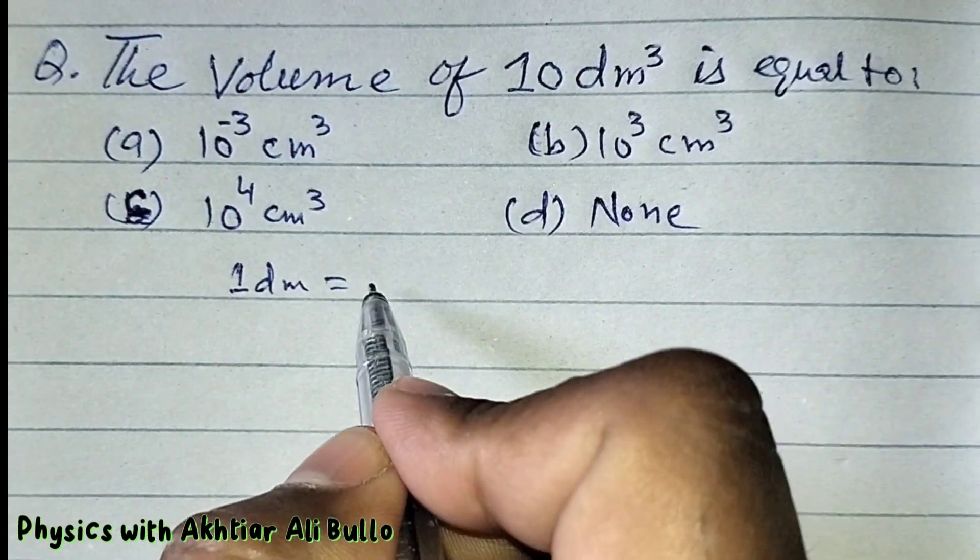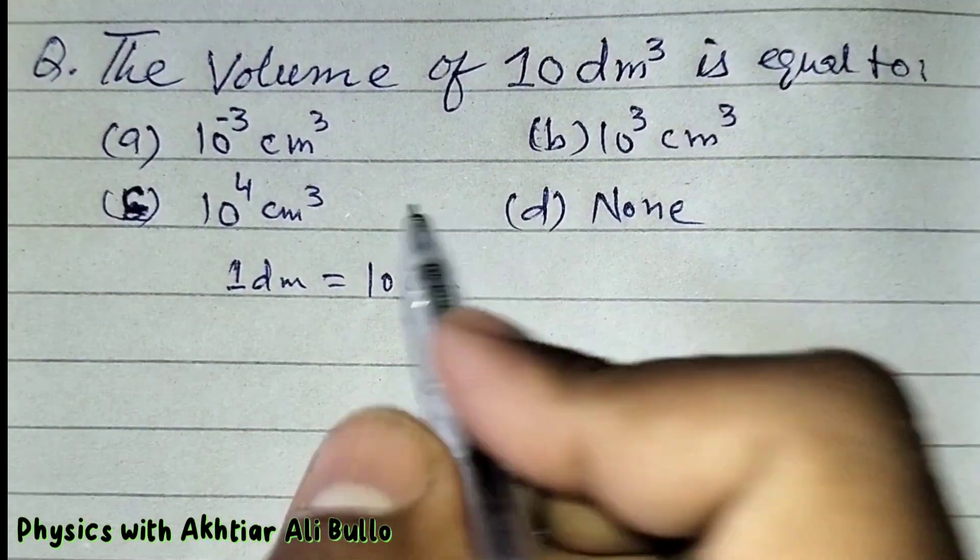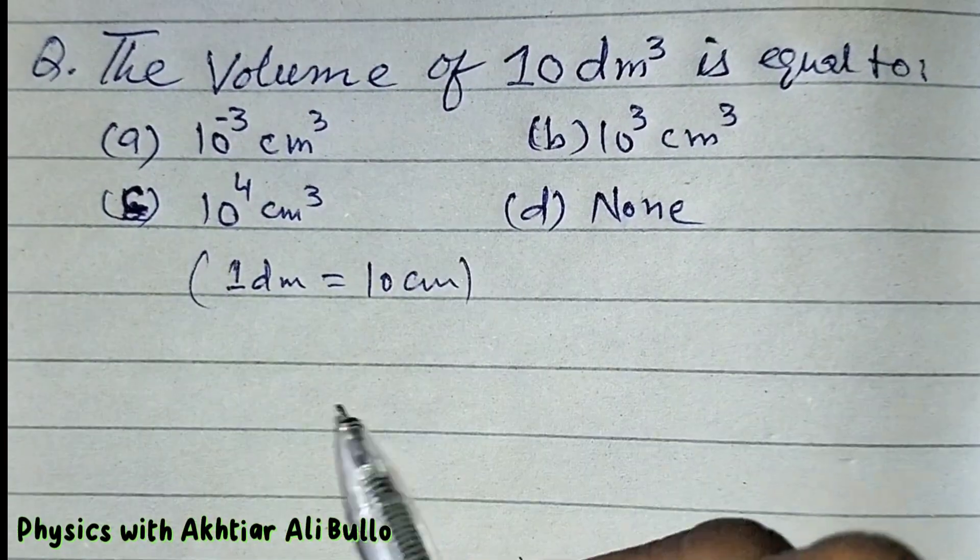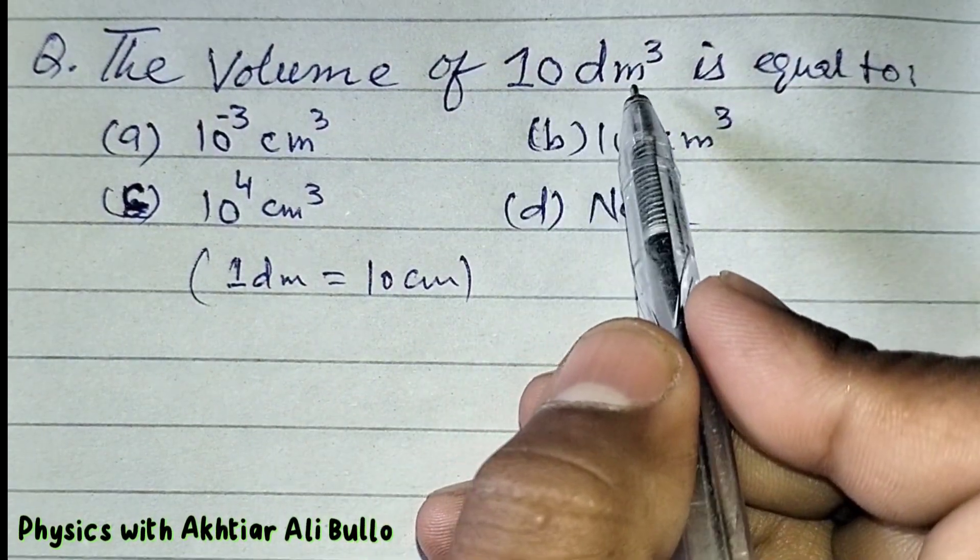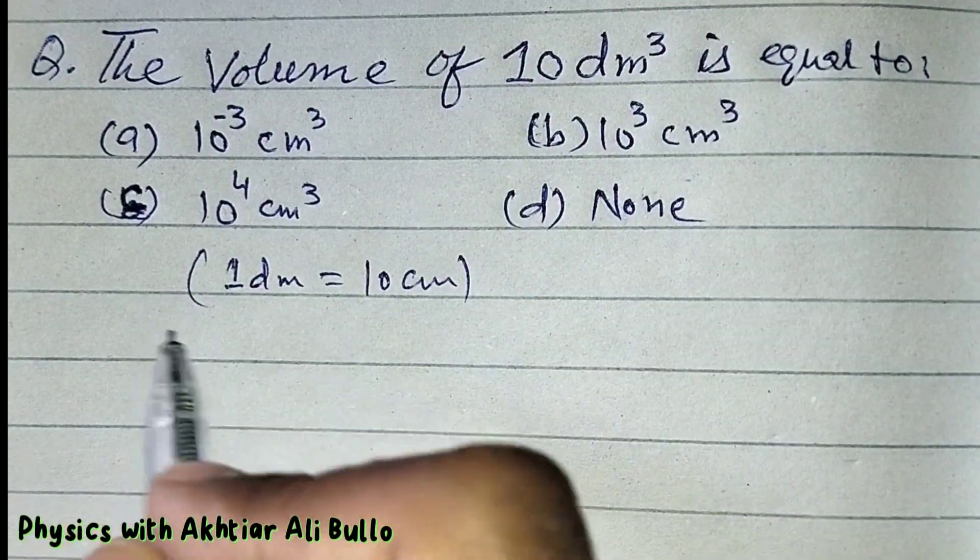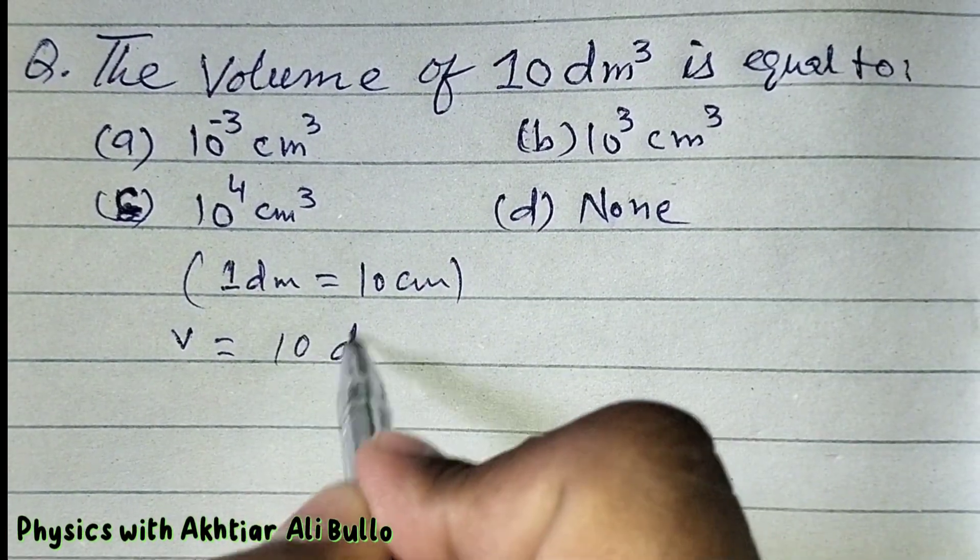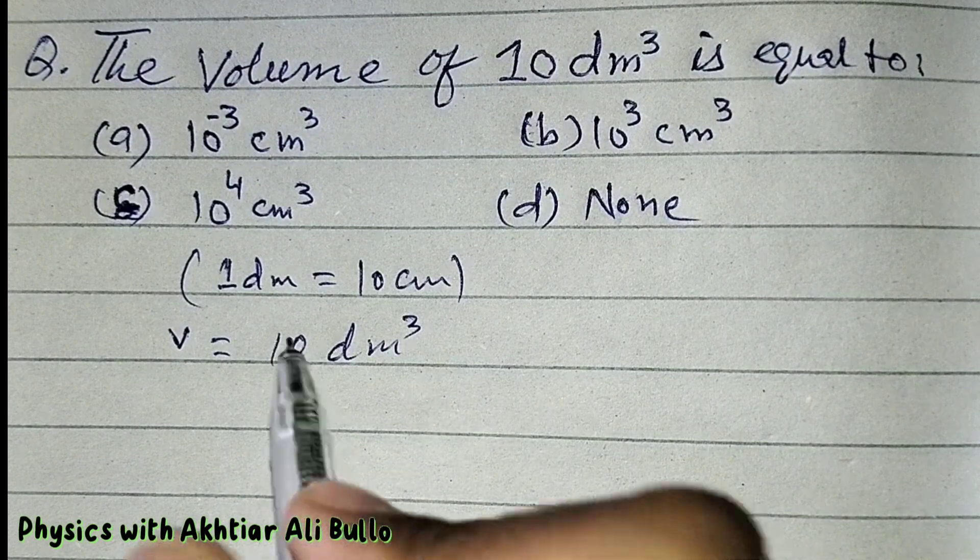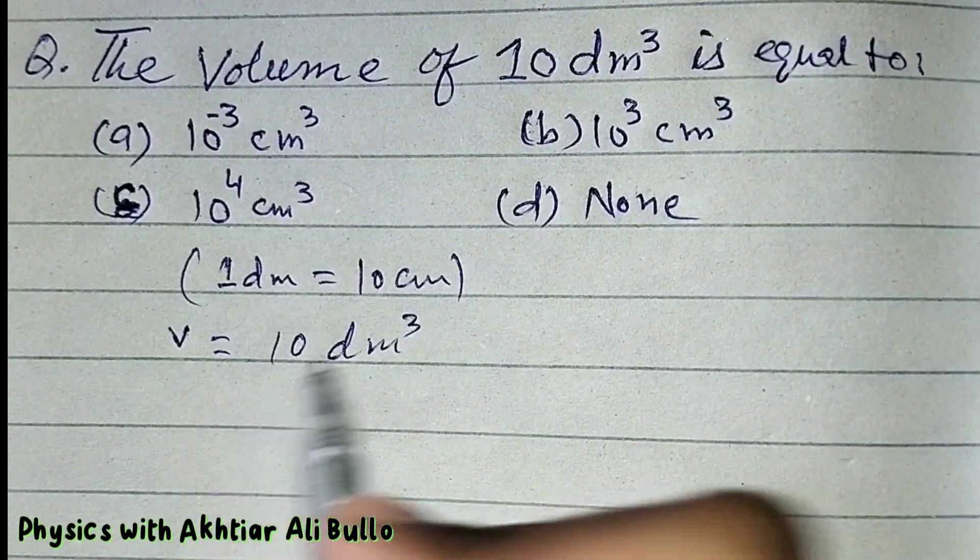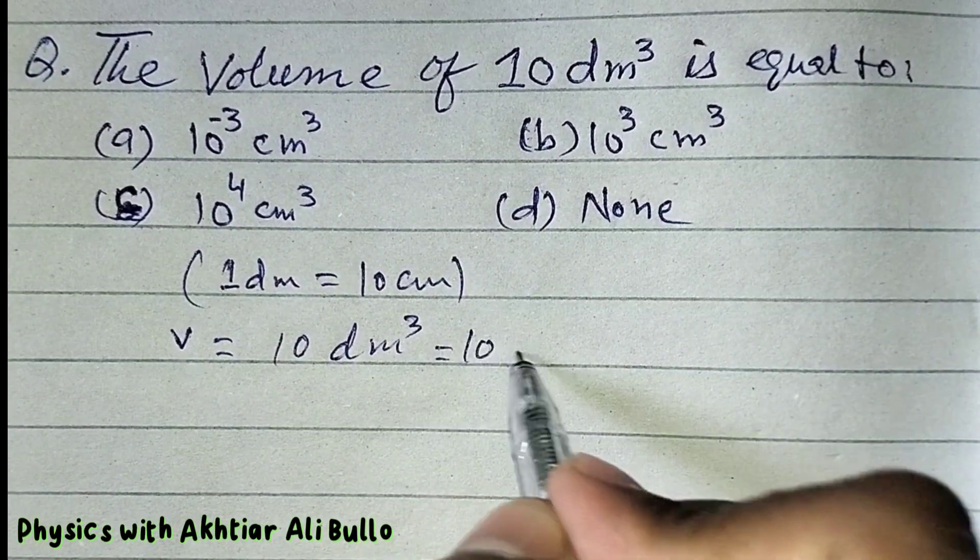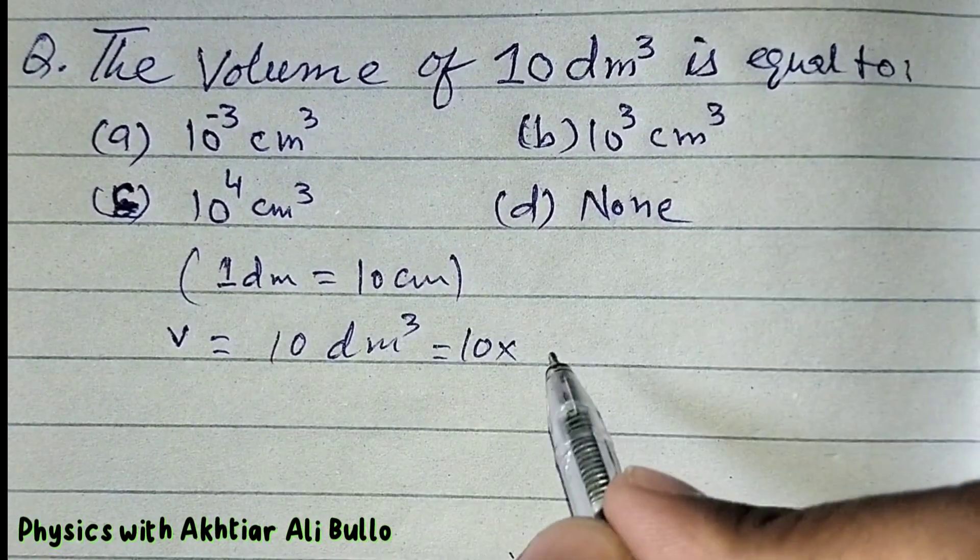10 centimeter. So by putting this value in place of 10 decimeter cube, the volume is obtained. Volume equals 10 decimeter cube. One decimeter is equal to 10 centimeter, so 10 into the value of one decimeter is 10